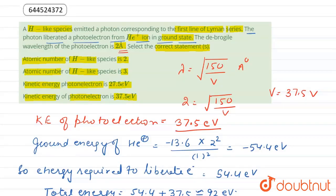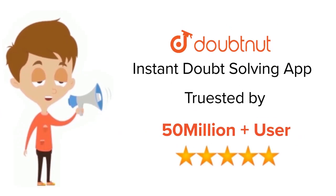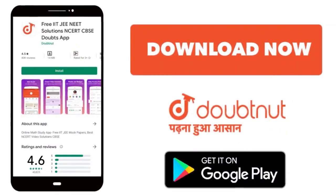In this question we have two correct options: Option B, atomic number of hydrogen-like species is 3, and Option D, kinetic energy of photoelectron is 37.5 electron volt. Thank you. For class 6 to 12th, IIT-JEE and NEET level, trusted by more than 5 crore students, download Doubtnut app today.